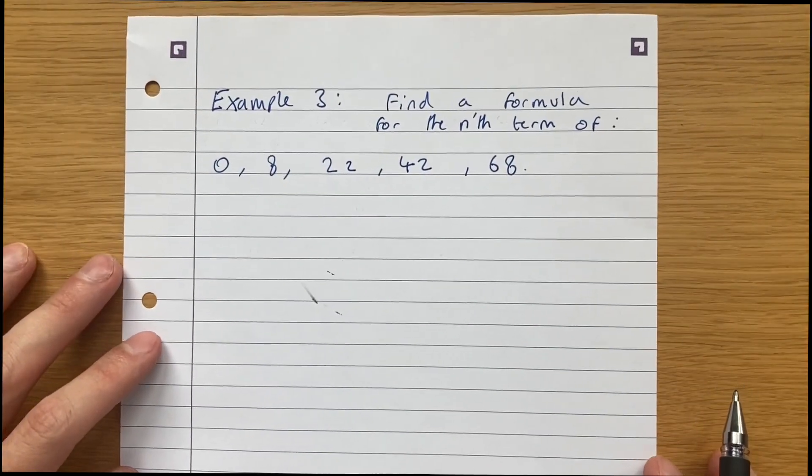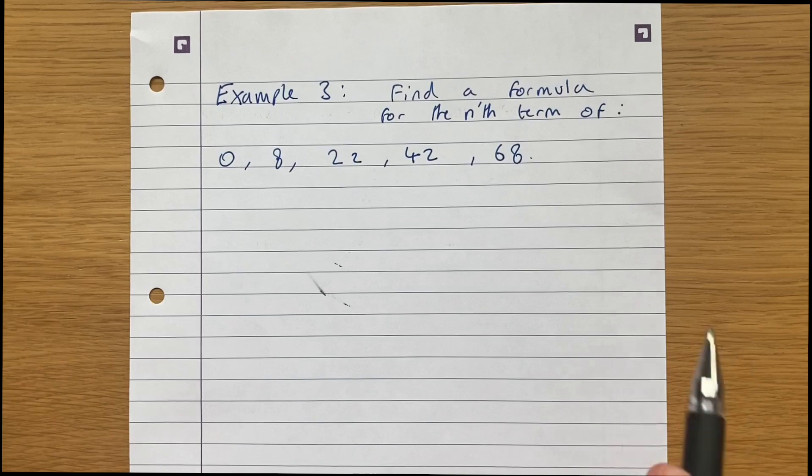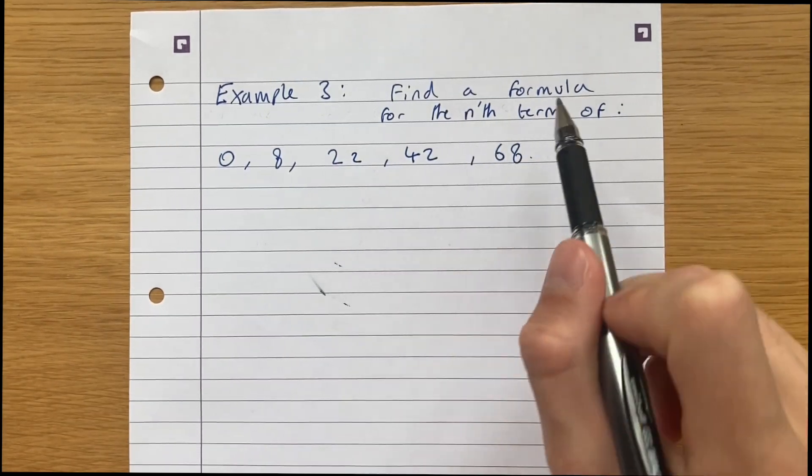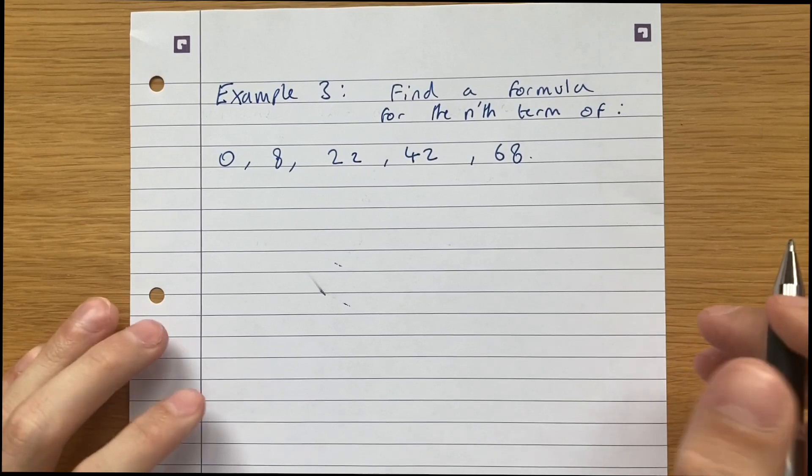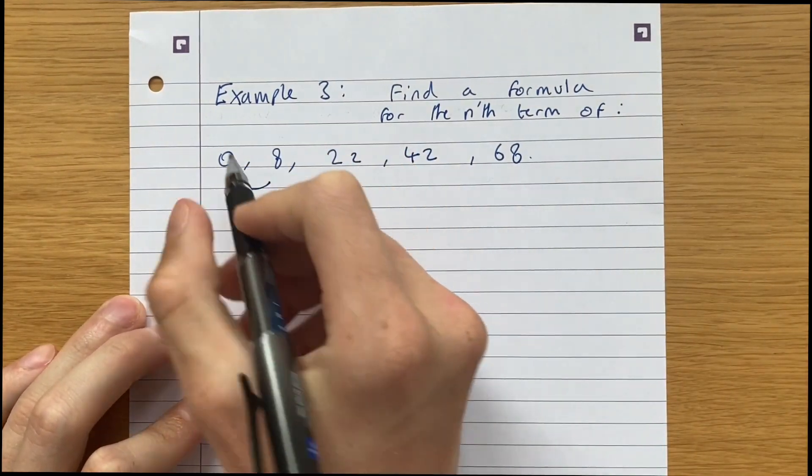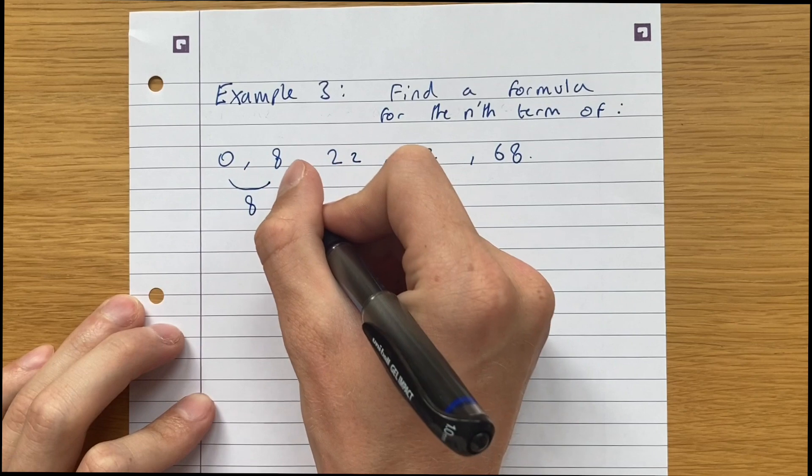So now let's go through an example where b is non-zero and how we go about solving that. Similar question, we're finding a formula for the nth term of this nonlinear sequence. You do the same thing as always. You find the first differences and the second differences.